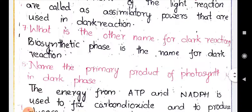The next question: 'What is the other name for dark reaction?' The other name for dark reaction is biosynthetic phase. The other name for light reaction is photochemical phase, because the reaction takes place only in the presence of light and that light energy is converted into chemical energy forming ATP and NADPH. For dark reaction, the name is biosynthetic phase because glucose — a biomolecule — is synthesized there.